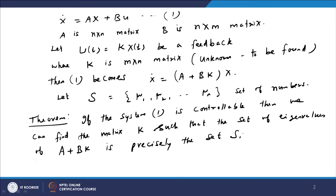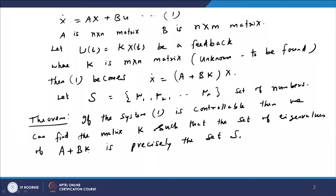So the theorem says: for any given arbitrary set S, we can find a matrix K so that A + BK has eigenvalues μ₁, μ₂, ..., μₙ, provided the system is controllable. This is a very useful theorem in many practical situations. If we want to stabilize the system, we require that all eigenvalues have negative real part. So if the system is already not stable, by selecting all μᵢ with negative real part, we can make the system stable.